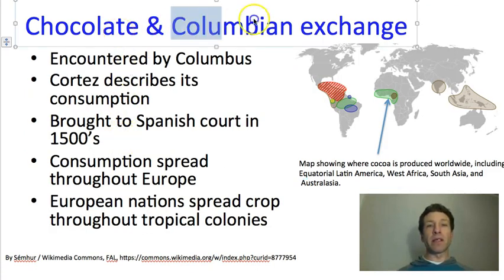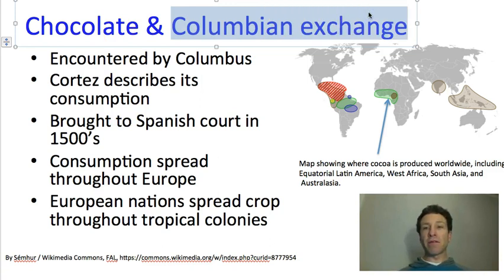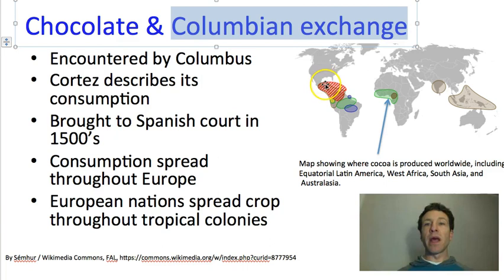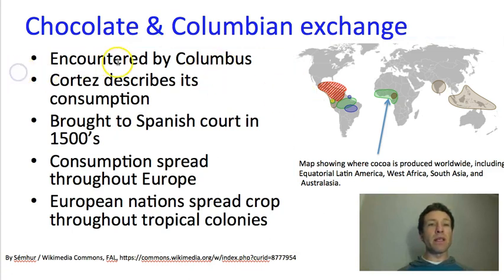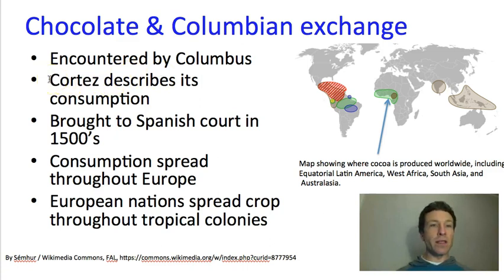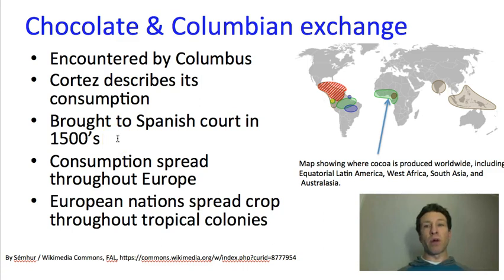We talked already about the Columbian Exchange — this refers to the period after Europeans came to the New World when many plants moved in both directions, from the Old World (mostly Eurasia) and plants were actively brought back to Europe. Chocolate was part of the Columbian Exchange. Columbus encountered chocolate, but it's not clear that he actually ate any or understood its significance — he just described the pods in a canoe. But Cortes at least witnessed its consumption and might have tried it, and chocolate was brought back to the Spanish court when some Native Americans were brought from the New World back to Spain in the 1500s and prepared the drink for Spanish royals.